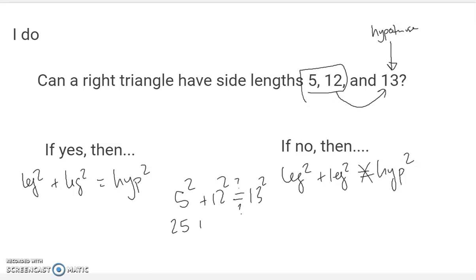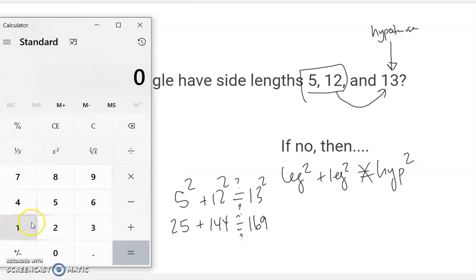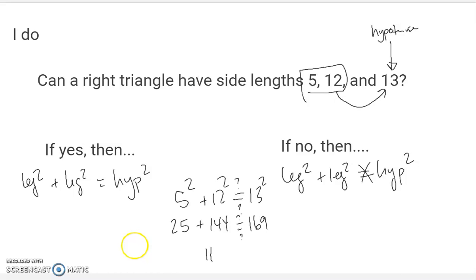So if I'm right, then 25 plus 144 should equal, and I'm going to keep the question marks until I know, should equal 13 squared is 169. Let's check and see, does 25 plus 144 equal that? And it does. So now that I do see that the two are equal, kind of like check, got it. That means yes, I do have a right triangle. That's how that works.